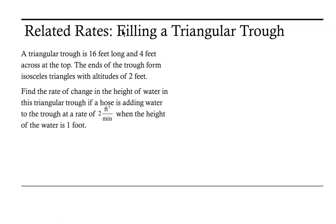Welcome. Let's take a look at a related rates problem that deals with filling a triangular trough. We have a triangular trough that is 16 feet long and 4 feet across the top. The ends of the trough form an isosceles triangle with altitudes of 2 feet. We want to find the rate of change in the height of water if a hose is adding water at a rate of 2 cubic feet per minute when the height of the water is 1 foot.